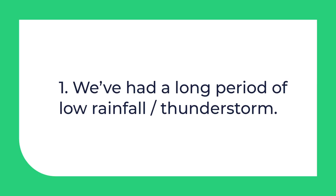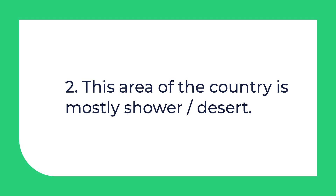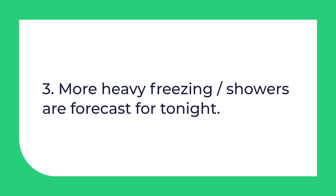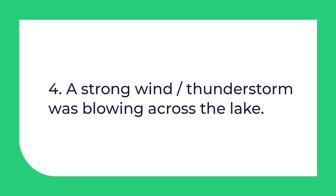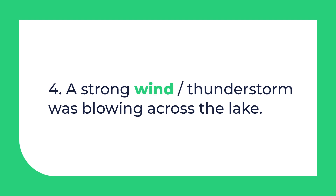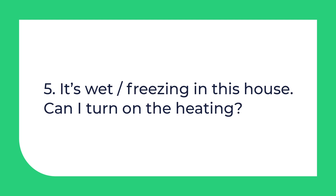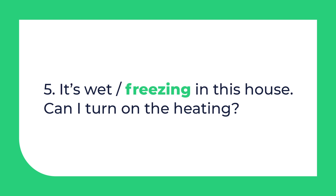Let's check! Number 1: We've had a long period of low rainfall or thunderstorm. The correct answer is rainfall. Number 2: This area of the country is mostly shower or desert. The correct answer is desert. Number 3: More heavy freezing or showers are forecast for tonight. The correct answer is showers. Number 4: A strong wind or thunderstorm was blowing across the lake. Wind is correct. Number 5: It's wet or freezing in this house. Can I turn on the heating? The correct answer is freezing.